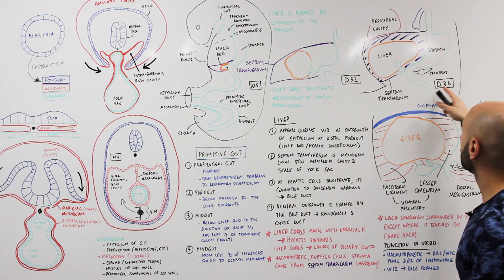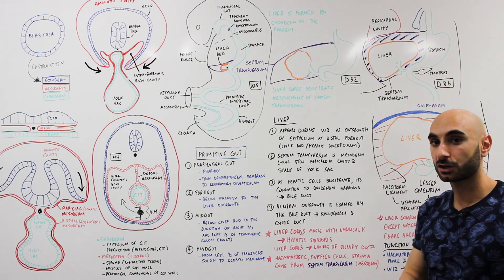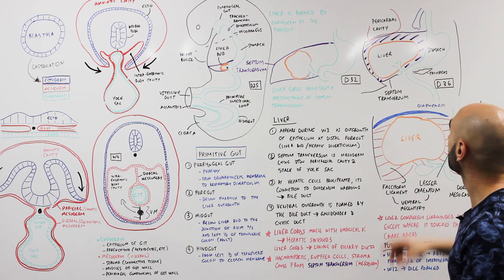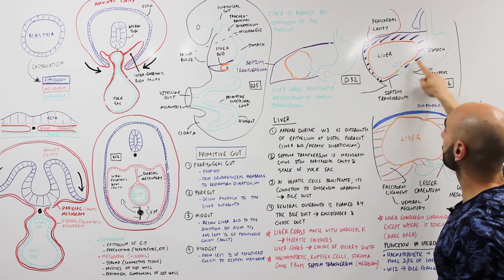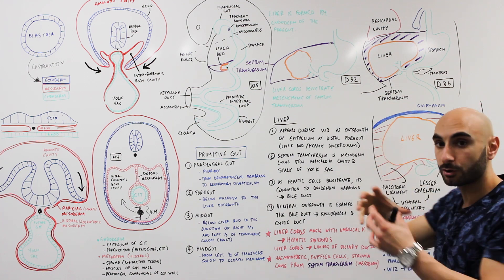Looking at this picture here, this is a day 36 cross-section of the embryo looking at it this way. In purple we have the septum transversum, in orange is the liver that's growing and filling this septum transversum.